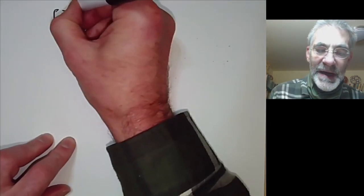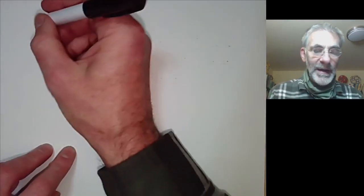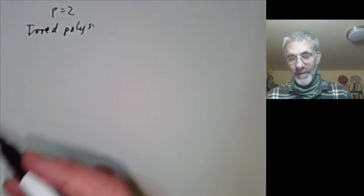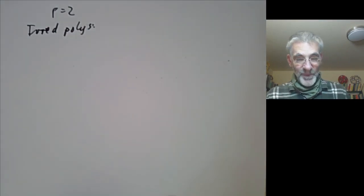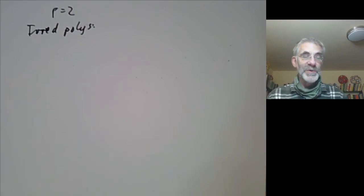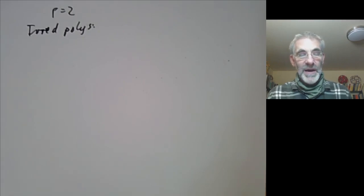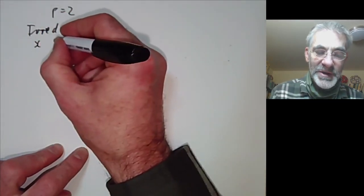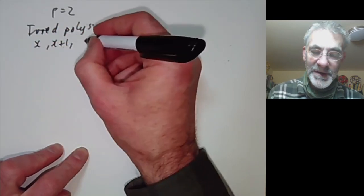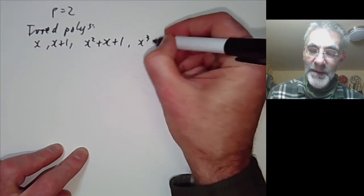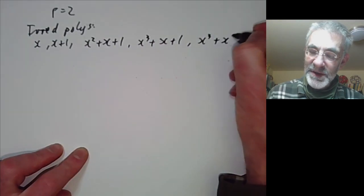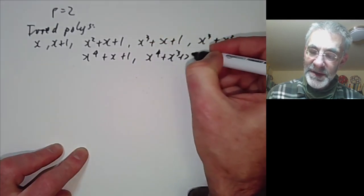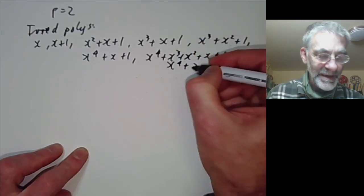Let's do this for p = 2 and construct small finite fields. Recall the irreducible polynomials over F_2, found by a sieve of Eratosthenes for polynomials. For degree 1: x and x+1. Degree 2: only x^2 + x + 1. Degree 3: x^3 + x + 1 and x^3 + x^2 + 1. Degree 4: x^4 + x + 1, x^4 + x^3 + x^2 + x + 1, and x^4 + x^3 + 1.